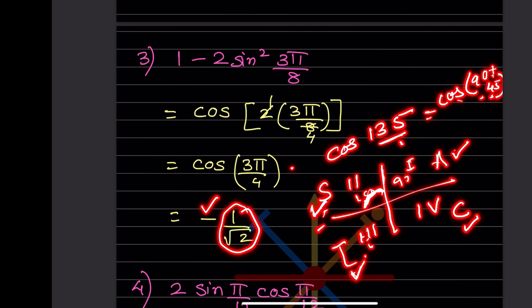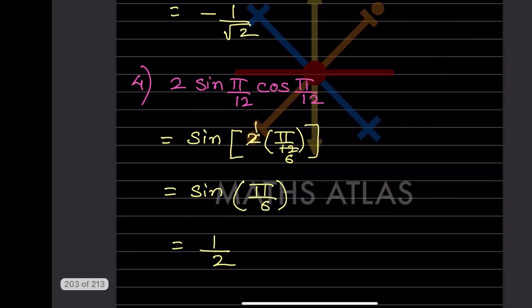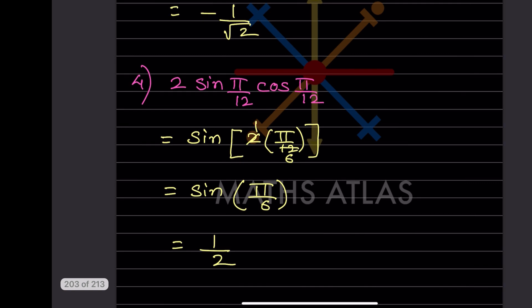Therefore cos135° is negative. We take the value of cos45 = 1/√2 but apply the negative sign because cosine is negative in the second quadrant, giving -1/√2.